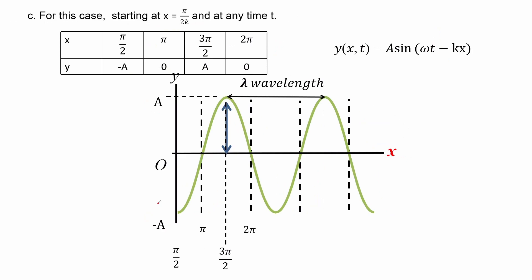The last case is for x starting at π/2k at any time t. Again, we set t = 0. We use the same x parameters: π/2, π, 3π/2, 2π. We know we're starting at x = π/2k. Substituting π/2 into the function gives a negative sine of π/2, which yields a negative amplitude. So the wave starts here at the negative amplitude.